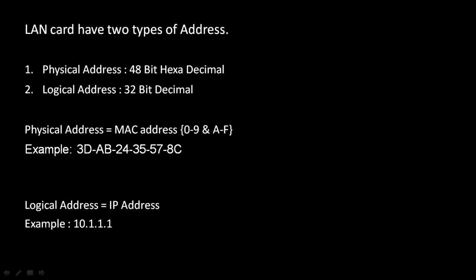Physical address is also called MAC address, that is media access controller. In hexadecimal we have numbers from 0 to 9 and alphabets from A to F. A MAC address will look like, for example, 3D-AB-24-35-57-8C. Every LAN card will have a MAC address and the MAC address is always unique.